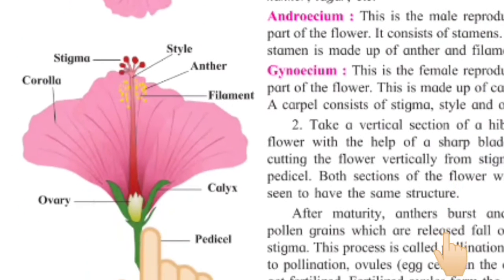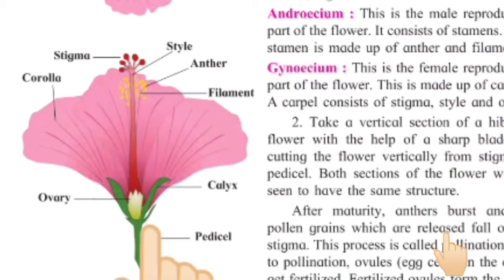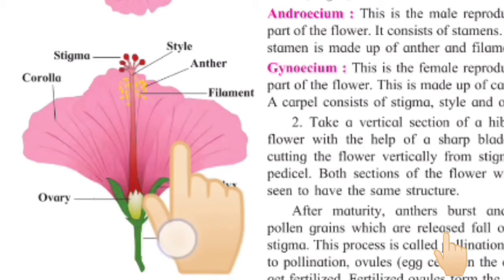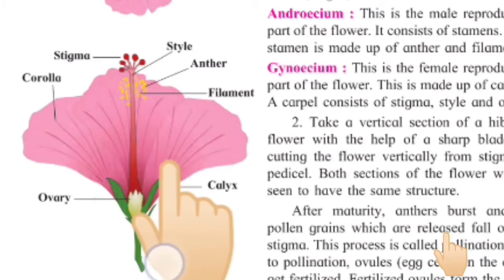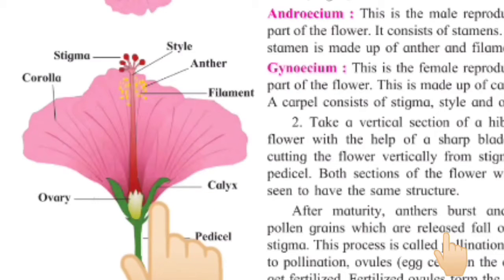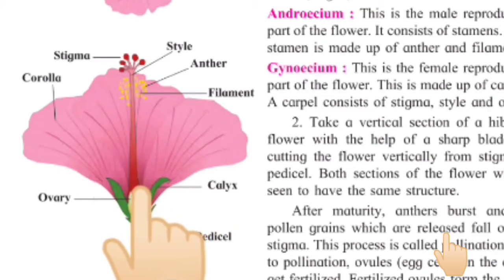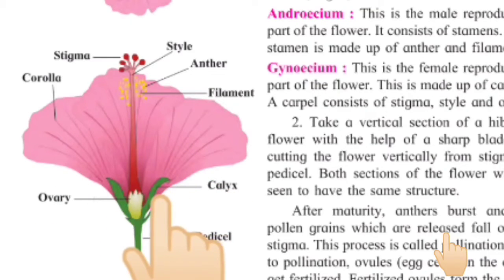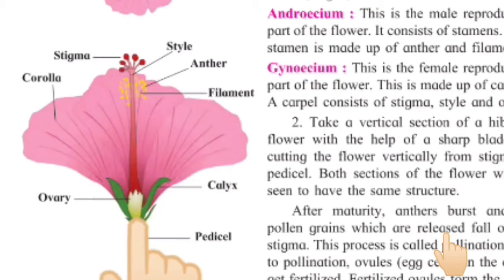What is a calyx? See in diagram 2 — you can see this particular green part, which is big and long in size, is called the calyx. And in that calyx, the small green part we call a sepal.